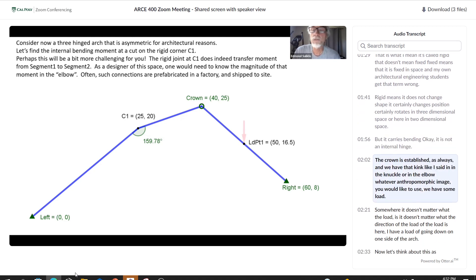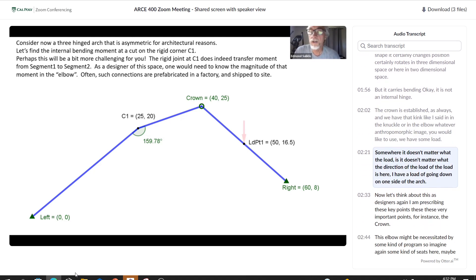The crown is established as always and we have that kink in the knuckle or in the elbow, whatever anthropomorphic image you would like to use. We have some load somewhere.